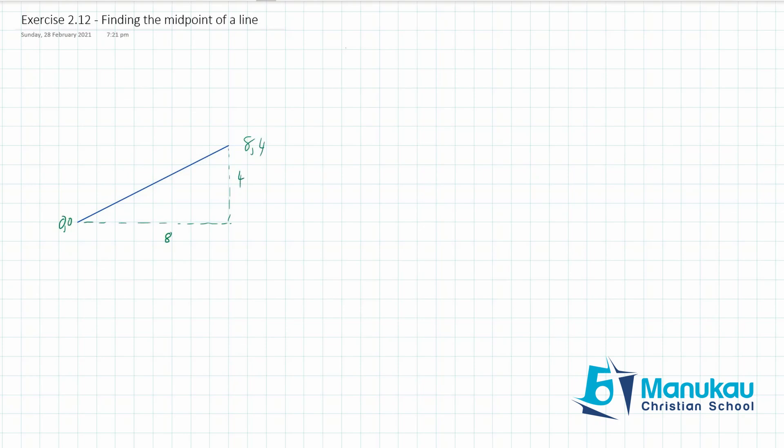So if I want to find the midpoint, I could take half of each of these. So instead of going across eight and up four, I could go simply across four—one, two, three, four—and then up two—one, two—and yes, that would be the midpoint of my line. So when you're finding the midpoint...